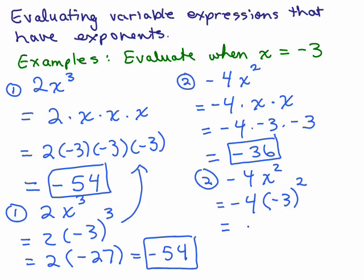And then you can now write out negative 4 times negative 3 times negative 3 so it ends up looking like that, or you could do that in your head which is 9 because it means negative 3 times negative 3, and still get a negative 36.